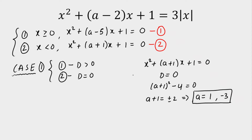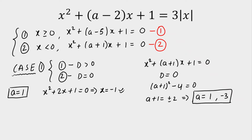Now let's check both values to see if the conditions are satisfied. For A equals 1, the second equation gives X squared plus 2X plus 1 equals 0, which implies X equals minus 1. We are getting a negative root, which satisfies our condition for X less than 0. Checking the first equation with A equals 1 gives X squared minus 4X plus 1 equals 0, and both roots alpha and beta will be positive. So A equals 1 is accepted.